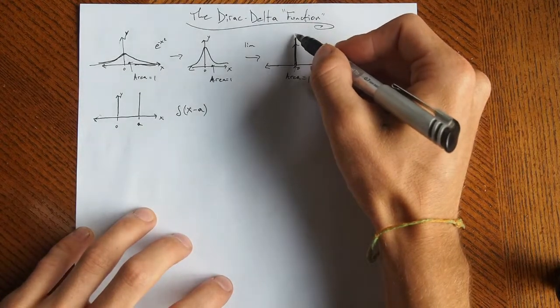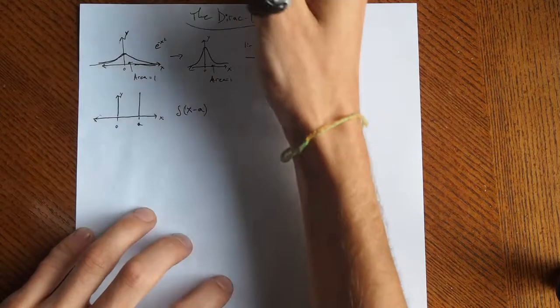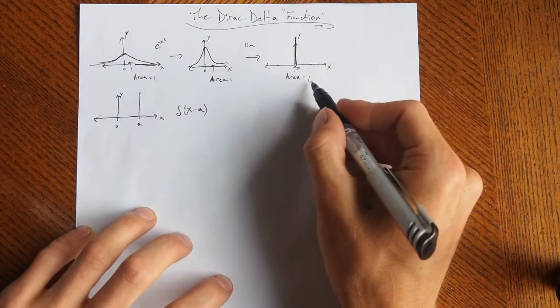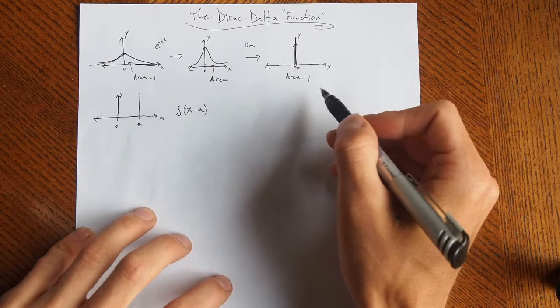you have this infinitely thin line that's infinitely tall, one-dimensional, and has an area of 1. If that sounds kind of weird to you, well, that's exactly why it's not a function.